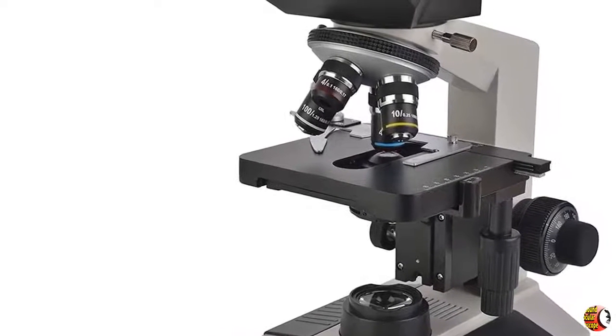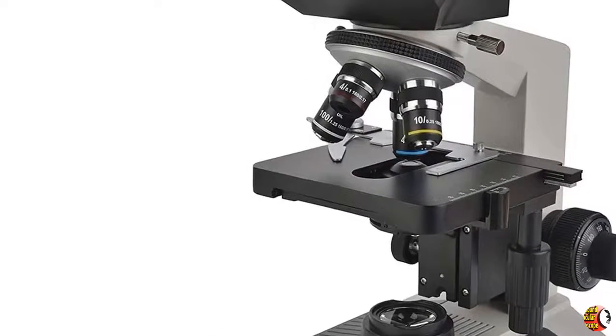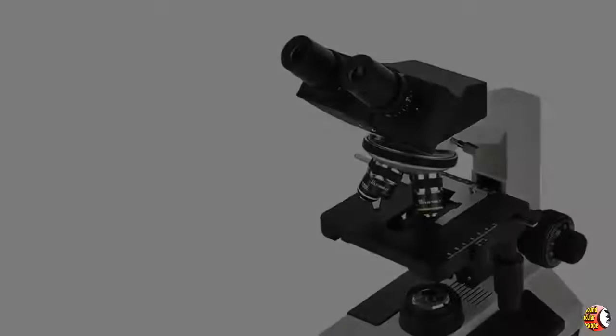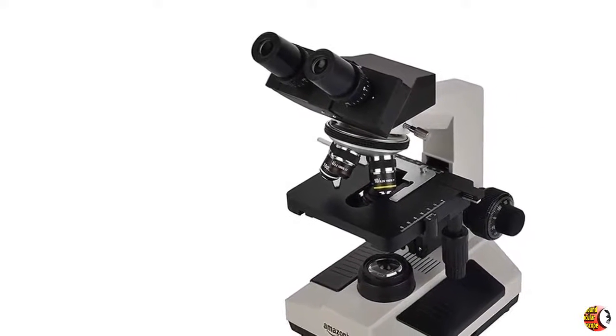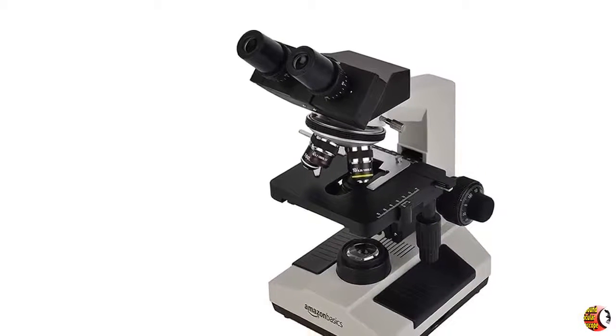Aluminum Design and Coated Glass Lenses. Built with a lightweight, compact aluminum metal frame, the Amazon Basics microscope offers durability and stability you can trust.